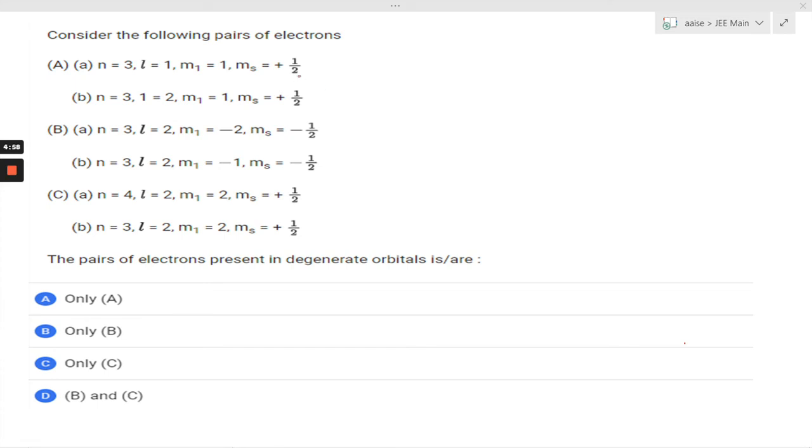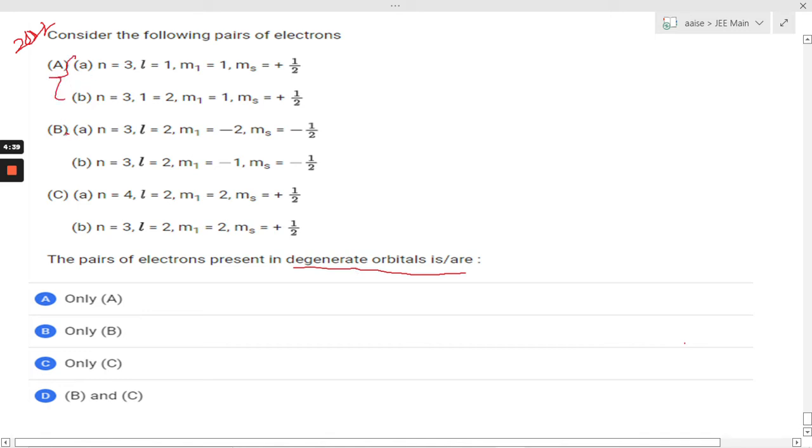Hello everyone, today we are having a question from JEE Mains 2022 paper. This question reads: consider the following pairs of electrons. The pairs of electrons present in degenerate orbitals is/are... So here we are having three pairs of electrons and we are supposed to find out whether they are present in degenerate orbitals or not.